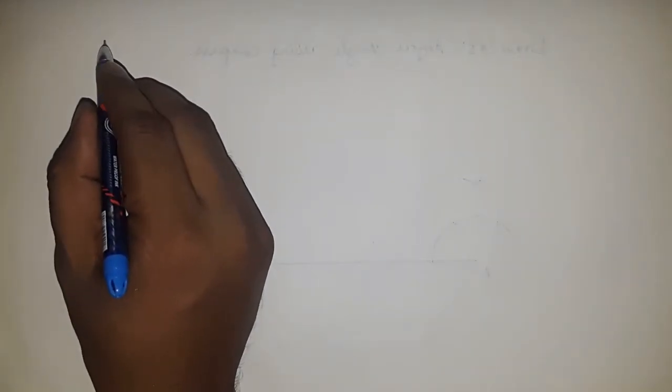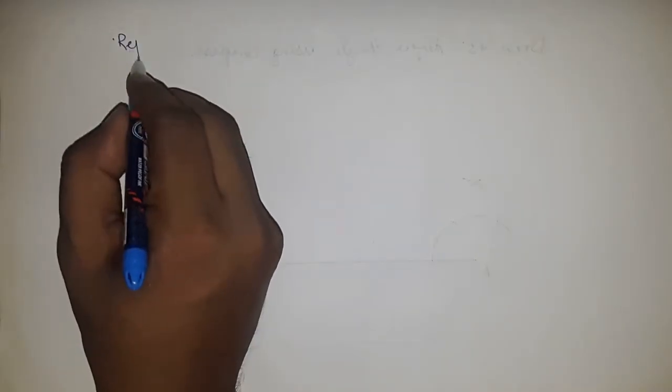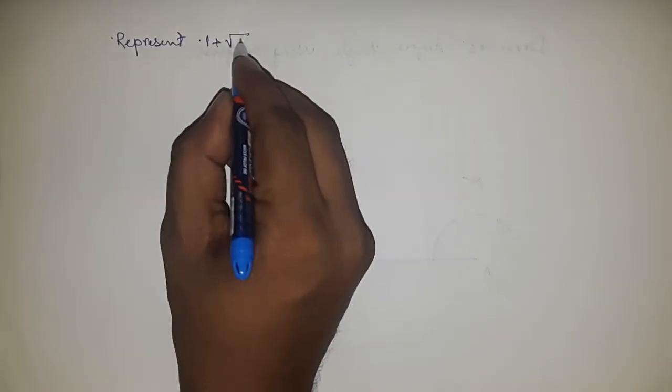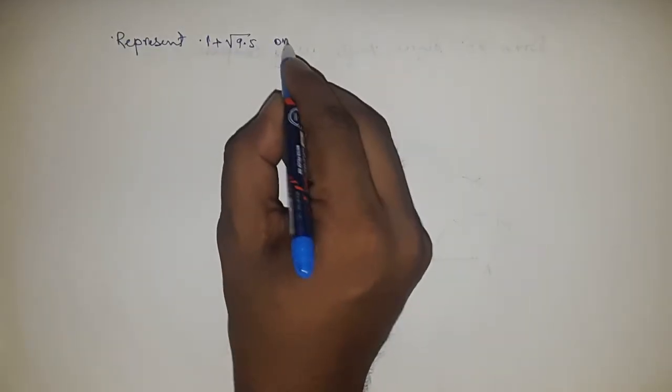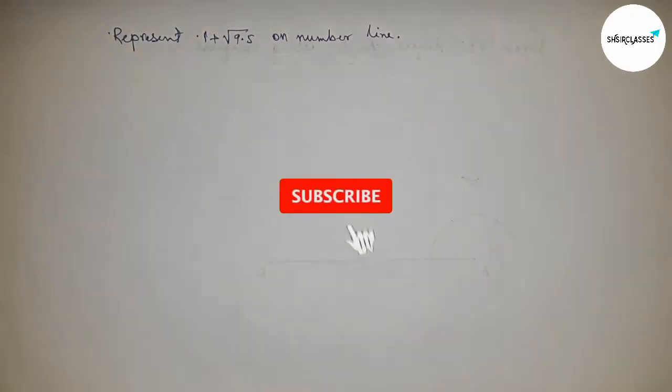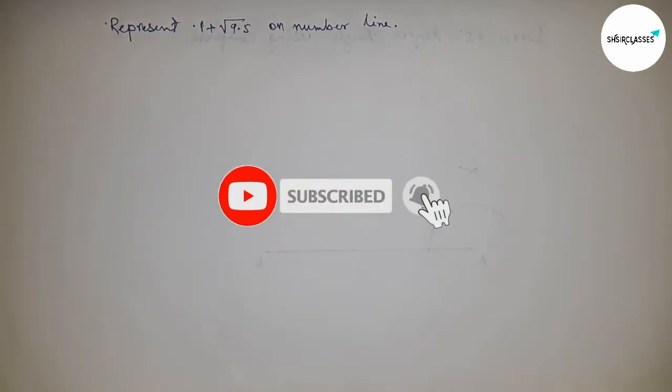Hi everyone, welcome to Assisted Classes. Today we're talking about the representation of 1 plus root 9.5 on a number line. Before starting the video, please subscribe to the channel and press the bell icon.